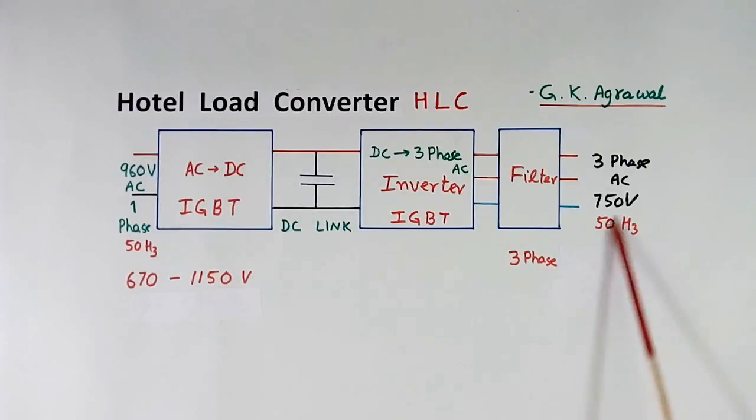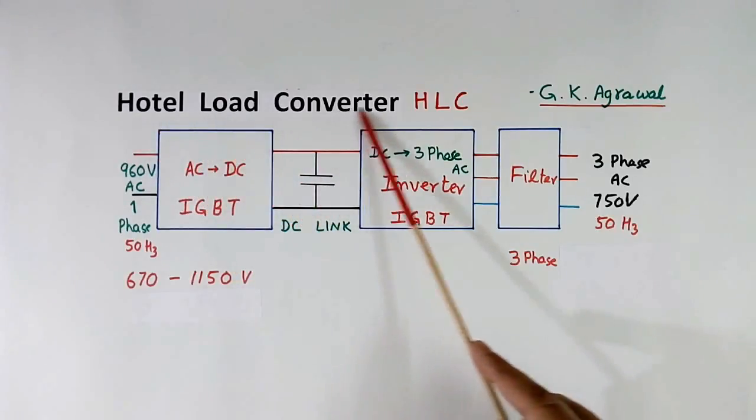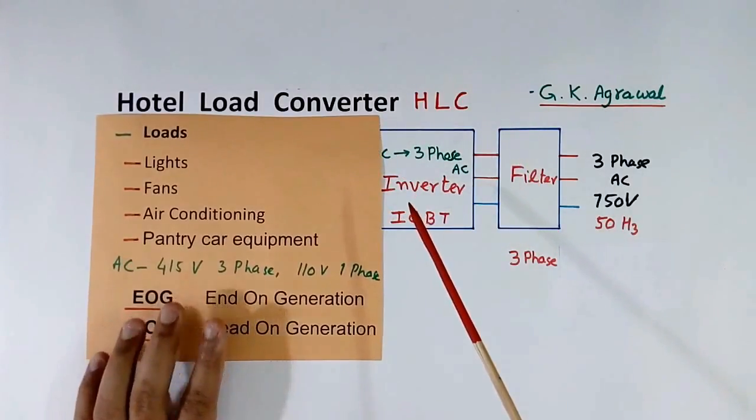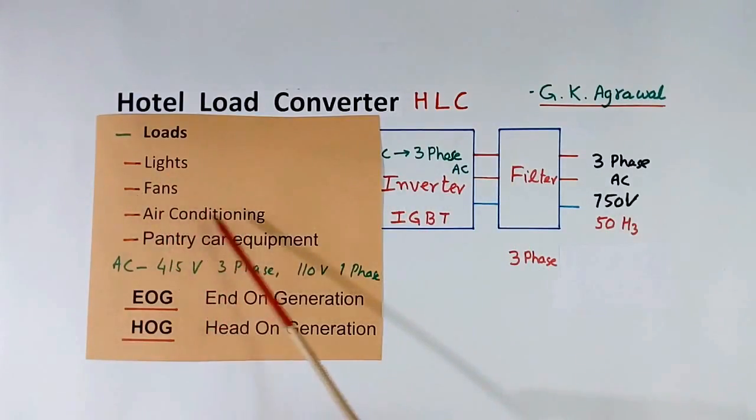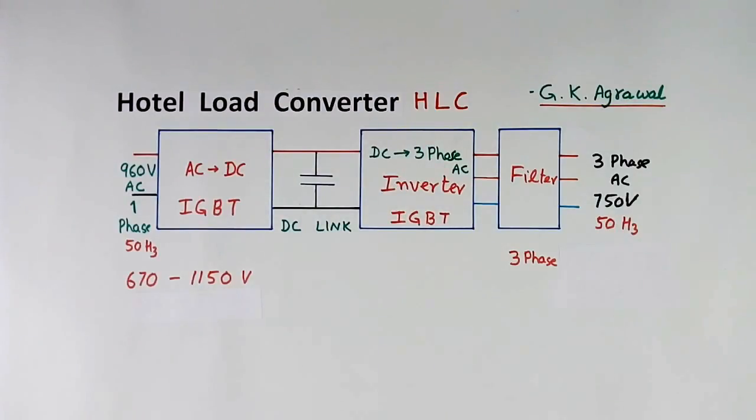This is block diagram of hotel load converter, HLC. Why it is called hotel load converter? I told you the train has these loads: lights, fans, air conditioning, pantry car equipment. In electric train, these loads are called hotel loads. So this is called hotel load converter. This HLC consists of four parts: IGBT based AC to DC converter or rectifier, DC link, third is IGBT based inverter, fourth is filter. Here single phase is available. This one converts single phase AC into DC.